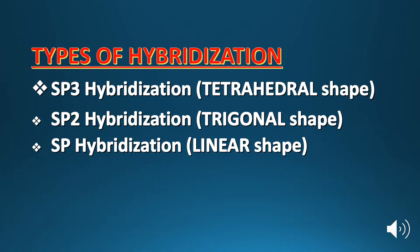Third is sp hybridization. In this case, two electron pairs are attached around the central atom. As a result, the molecular geometry or shape is linear.